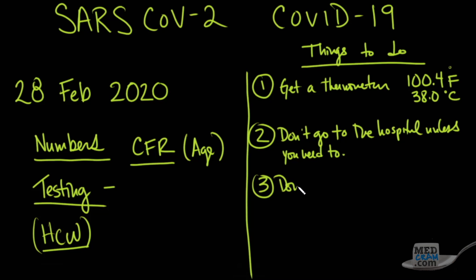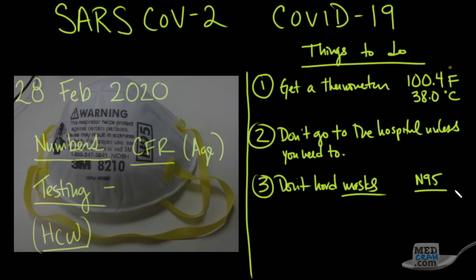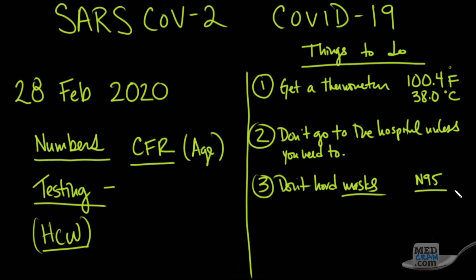Number three: don't hoard masks. There are two types — regular surgical masks and N95 masks. A regular surgical mask, other than preventing you from touching something and then touching your nose, will not prevent you from getting coronavirus. Those masks are not designed to filter the air you breathe in — only N95 masks do that. Wearing a surgical mask if you're perfectly healthy will do you no good. Those masks are needed at the hospital for patients who are already sick.